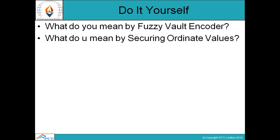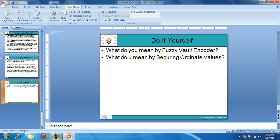Questions for review: What do you mean by fuzzy vault encoder? What do you mean by securing ordinate values? In conclusion, we have shown that both the performance and the security of a fingerprint fuzzy vault can be improved by incorporating a minutia descriptor. The descriptor consists of ridge frequency and ridge orientation information in a minutia neighborhood, which helps encrypt the ordinate values of the polynomial during vault construction. Experimental results on a public domain database confirm this improvement.